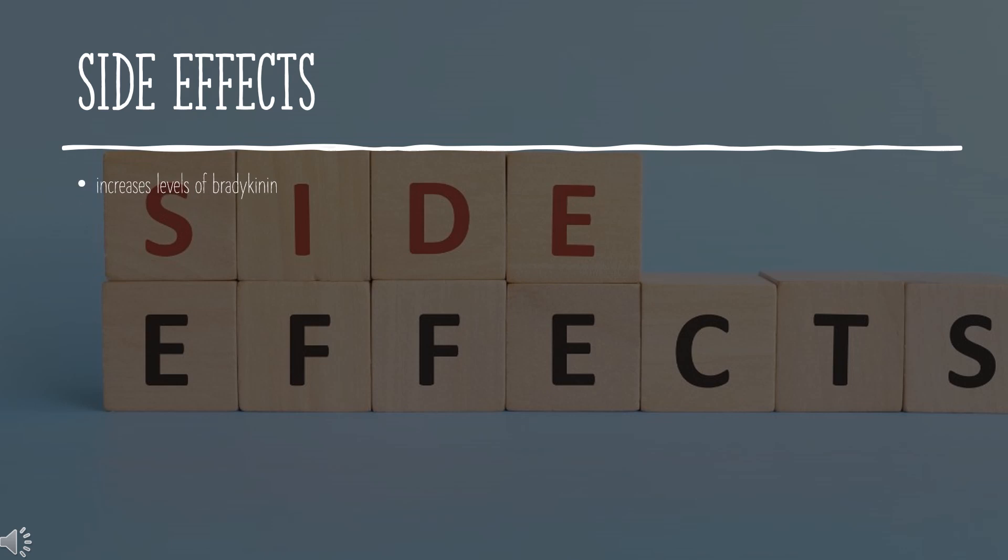Side Effects: Secubitril increases levels of bradykinin, which is responsible for the edema seen sometimes in patients taking the medication. This is why the medication is not recommended for patients with a history of pulmonary edema with the usage of ACE inhibitors.